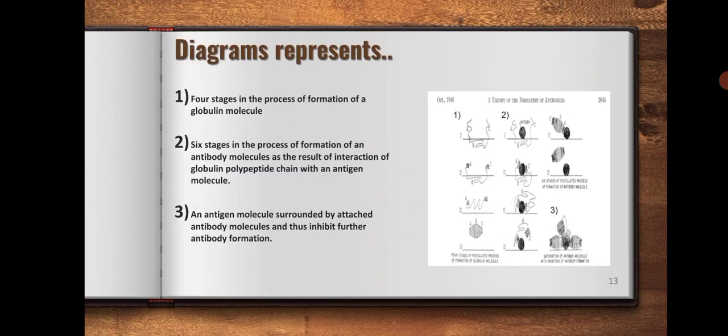The diagram here represents four stages in the process of formation of a globulin molecule, six stages in the process of formation of an antibody molecule as a result of interaction of globulin polypeptide chain with an antigen molecule, and an antigen molecule surrounded by attached antibody molecules, thus inhibiting further antibody formation.